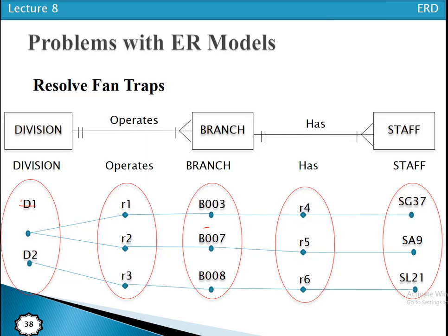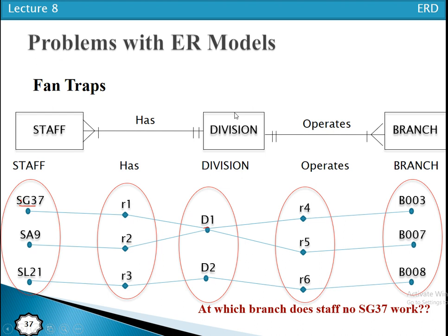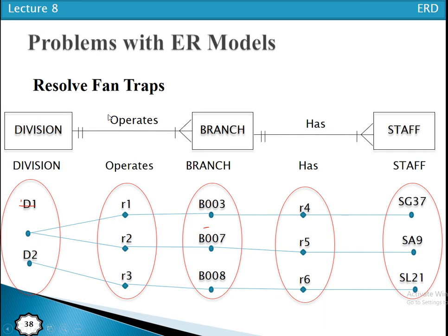We can resolve this problem by restructuring the relationship to represent the correct associations between entities. Previously, two one-to-many relationships were fanned out from the same entity. Now we restructure the ER model so that each division has one or many branches, and one branch has one or many staff members. So the one-to-many relationship is now between branch and staff — only one one-to-many relationship is fanned out from each entity type.